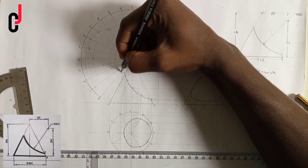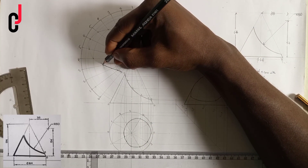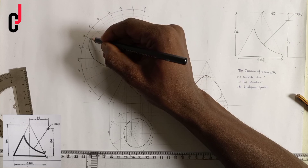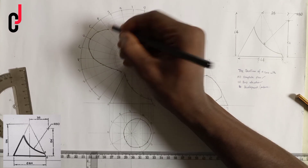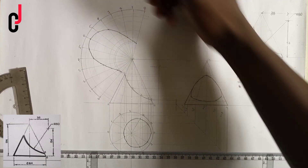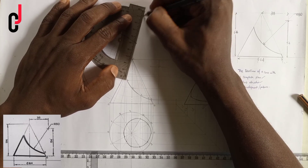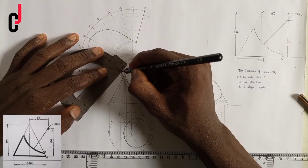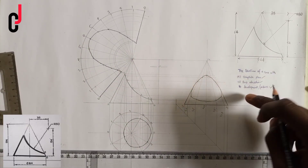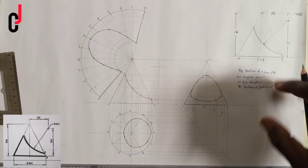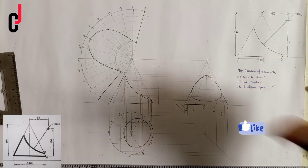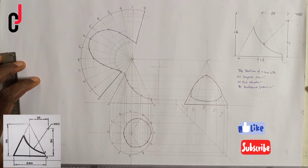I'm done with my light sketch, then I'll outline. Outline from point zero to this portion, point zero to this section. I'm done drawing my plan, which is my development, also known as the pattern. Thank you for watching. I still remain GC Engineering Drawing. Don't forget to give me a thumbs up and subscribe to my channel.